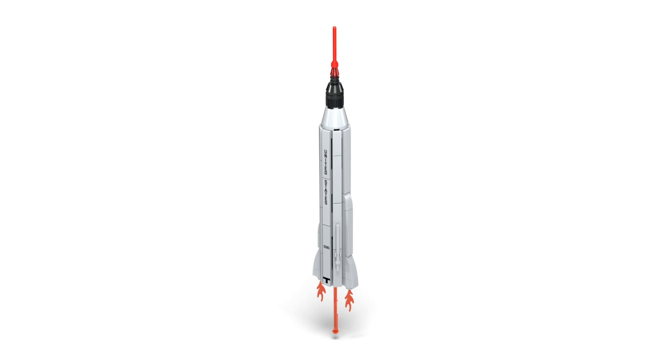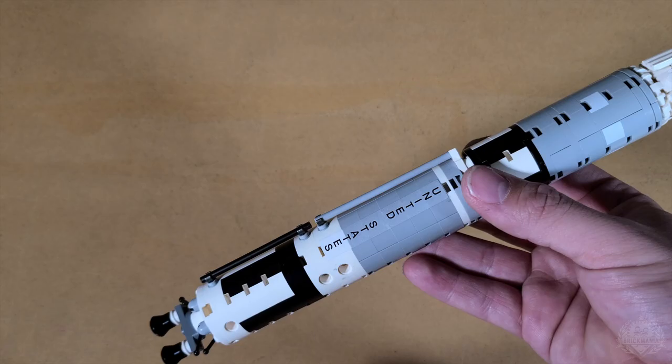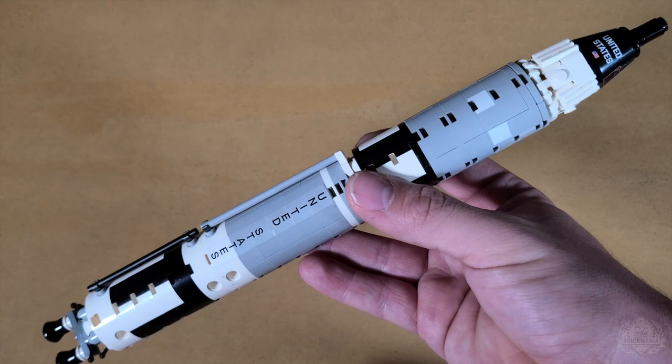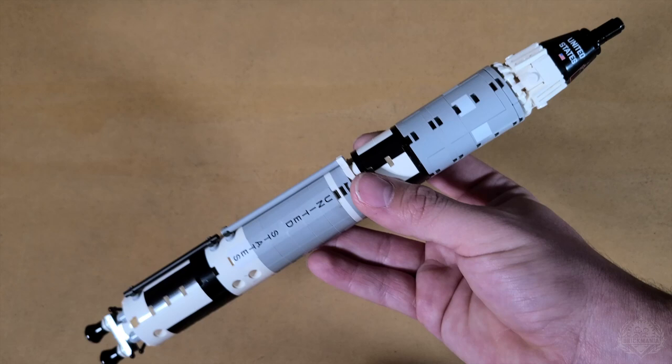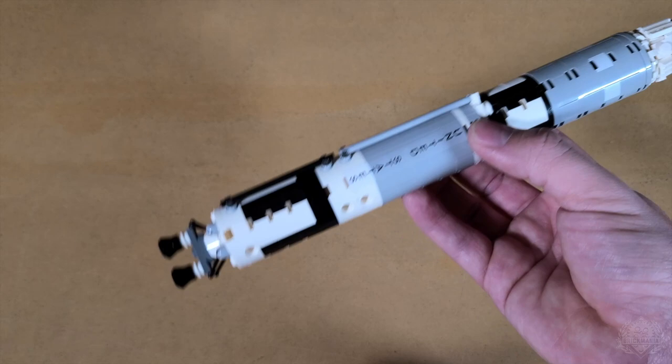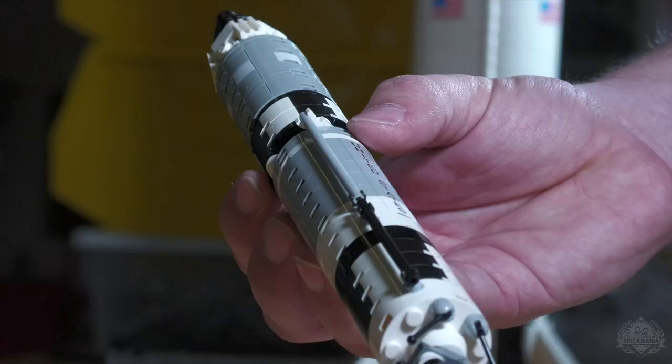But when the target was set that they were going to land on the moon before the end of the decade, they knew they needed to start launching a larger capsule into orbit. They needed something with more than one person. They needed something that could sustain people for multiple days. And that meant they needed a heavier, more powerful launch vehicle. So they looked to the Titan II missile, which was already in development. And they said, okay, how can we make this thing be human rated?